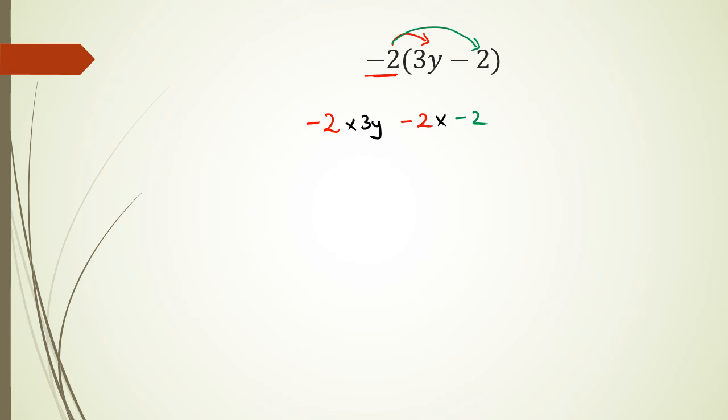So to sum it up, I've got negative 2 times 3y which is negative 6y, and then negative 2 times negative 2 is positive 4. Therefore my final answer after expanding this brackets is negative 6y plus 4.